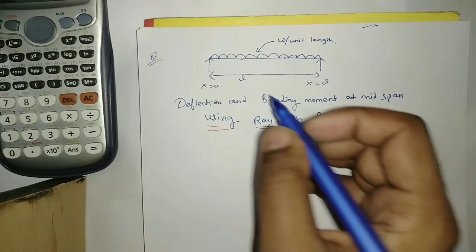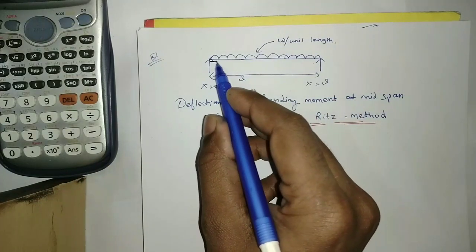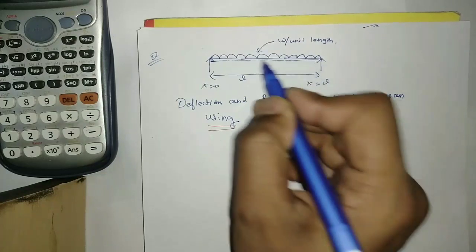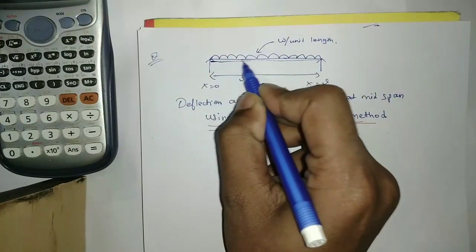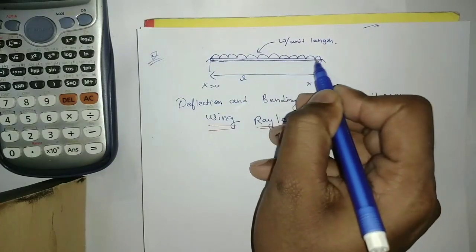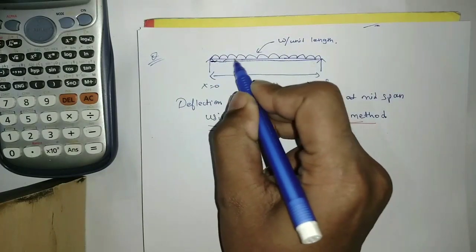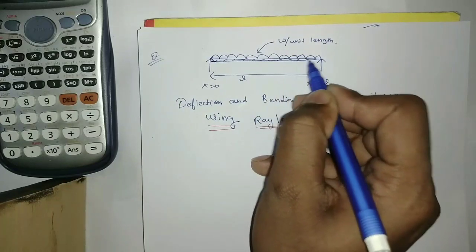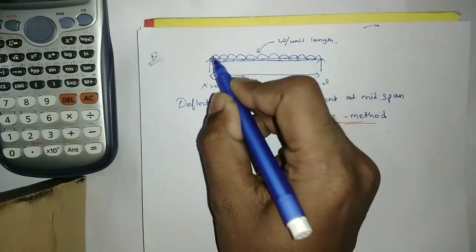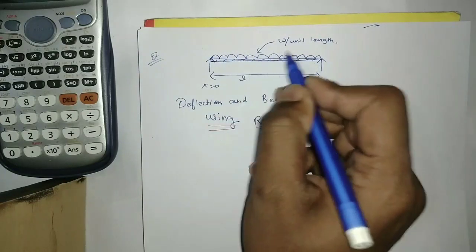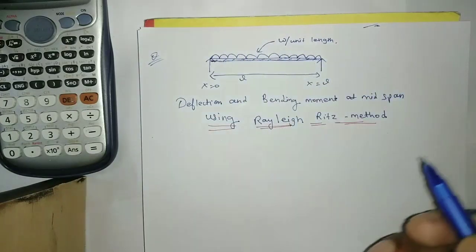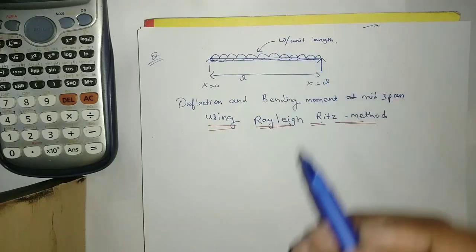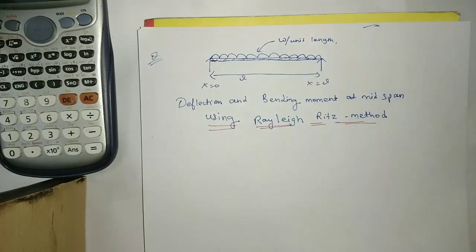This is our beam. This beam is simply supported with a UDL — a uniformly distributed load — W per unit length.